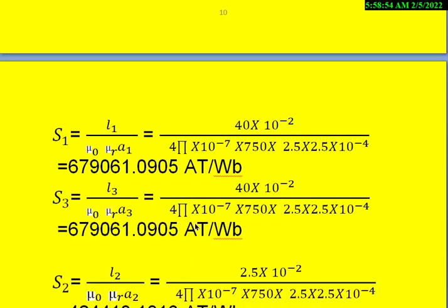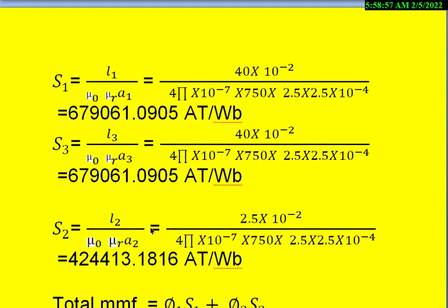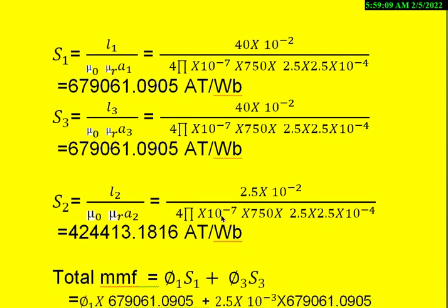Similarly, when we calculate the middle part reluctance, we get L2 by mu 0 mu R A2. So L2 is given as 2.5 into 10 power minus 2 meters divided by 4 pi into 10 power minus 7 for mu 0 and mu R is already given as 750. And then area of the core is given as 2.5 into 2.5 cm square. So multiply that with 10 power minus 4 to get the meter square. Then once we simplify that, we get 424,413.1816 ampere turns per weber.